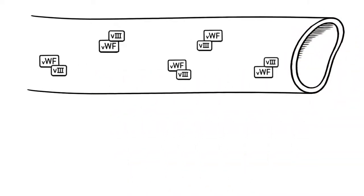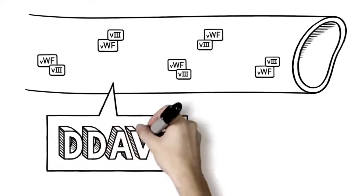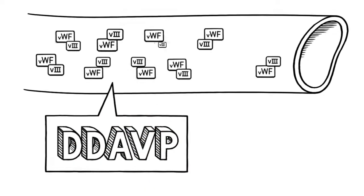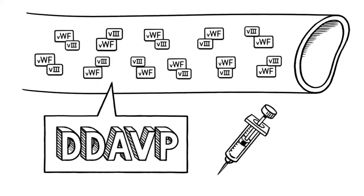Treatment for VWD depends on the type and severity. The most common treatment, DDAVP, boosts factor levels in the blood. It can be taken by injection or nasal spray.